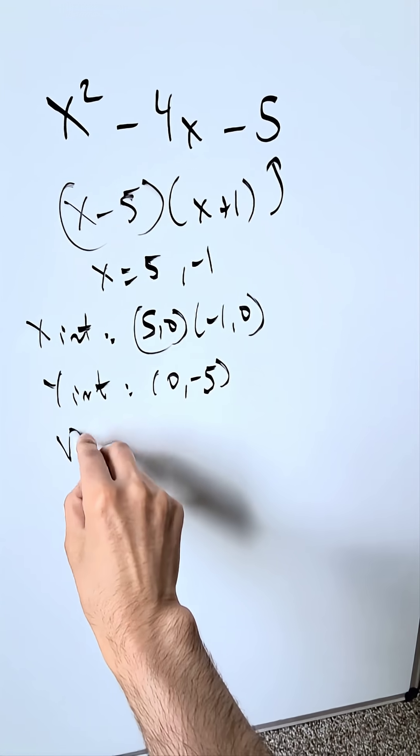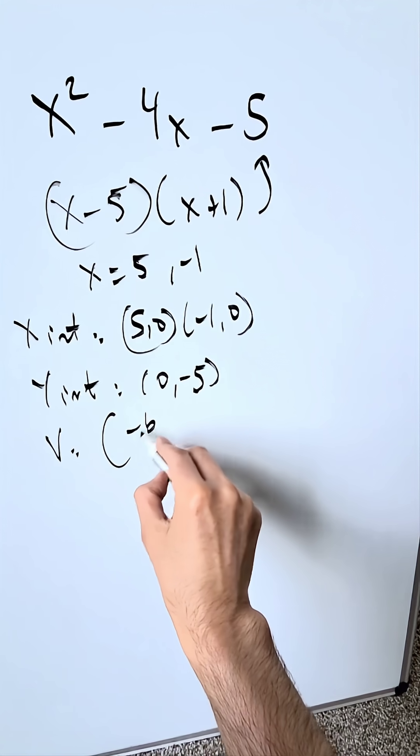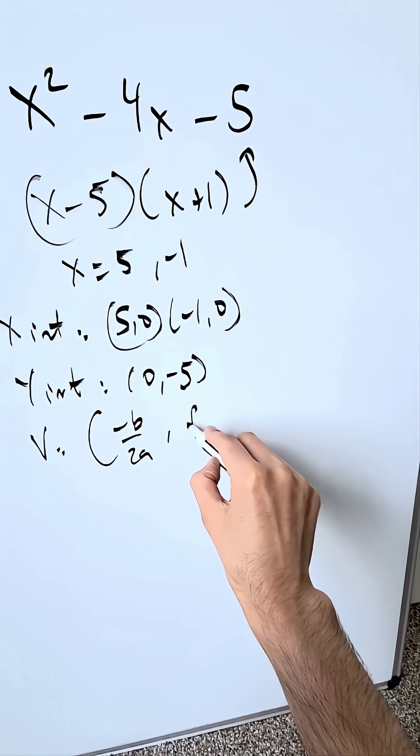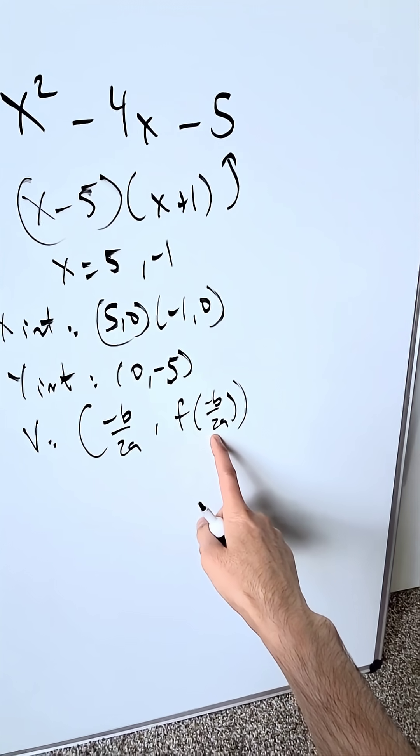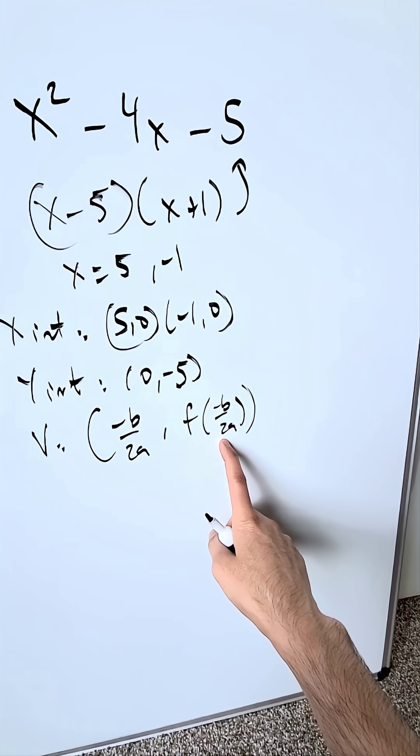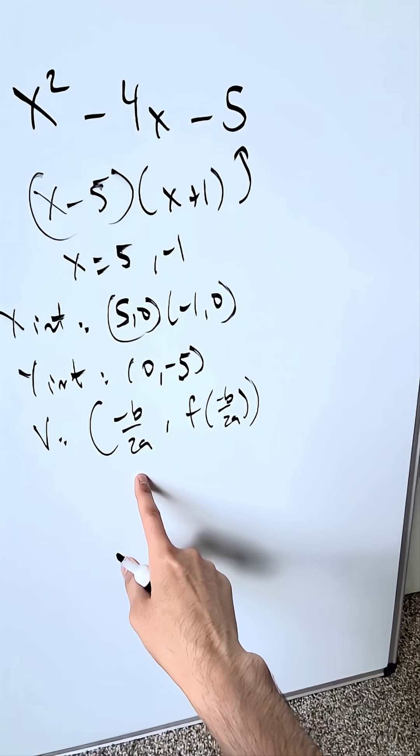The last thing I need now is my vertex. You can do that by doing minus b over 2a and then you can put the value of this into your original function which you see at the very top. And what you get here as your output is your y-value of the vertex.